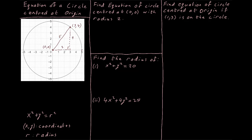So the hypotenuse squared — or the radius squared — would be equal to 3 squared plus 4 squared. That's our Pythagoras: the hypotenuse squared equals 3 squared plus 4 squared, which gives us 9 plus 16, so the hypotenuse squared is 25. We take the square root of both sides to find that our hypotenuse is 5. And we know the hypotenuse of this triangle is the radius of our circle.